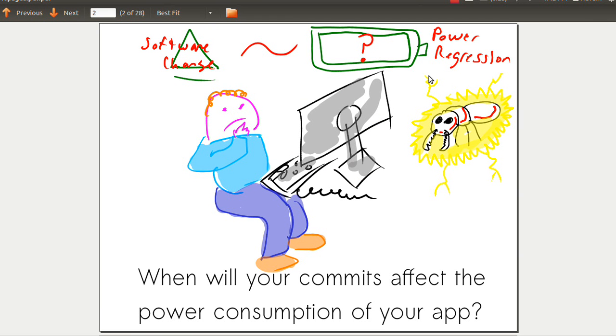To introduce Green Mining, imagine you have a software change - you've made a commit. How do you know if that commit can induce a power regression or not? Is it benign to the power use of the software?